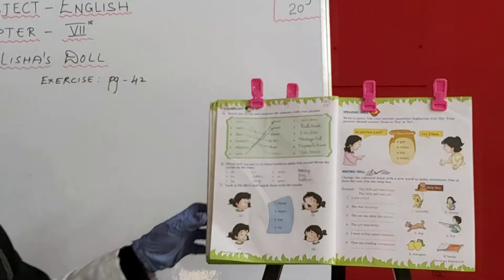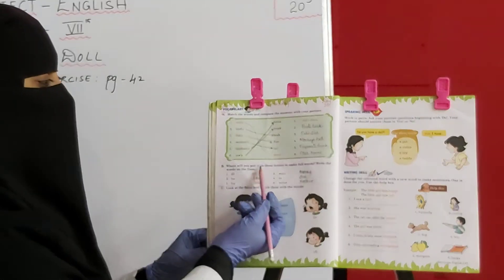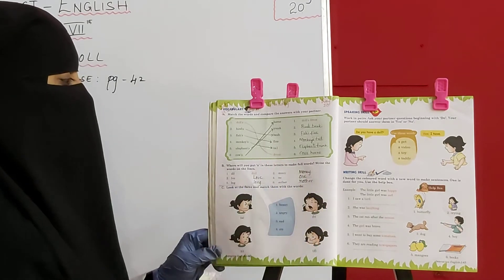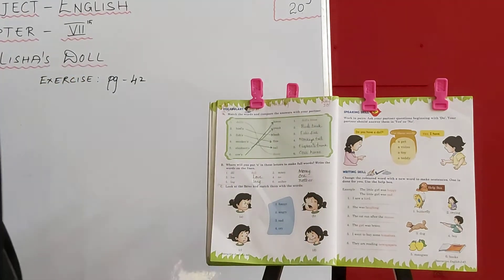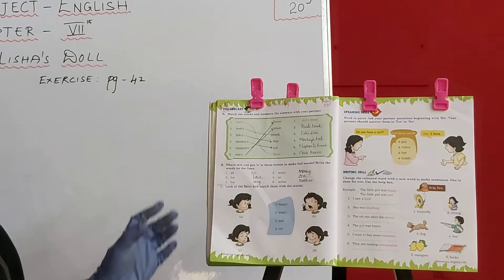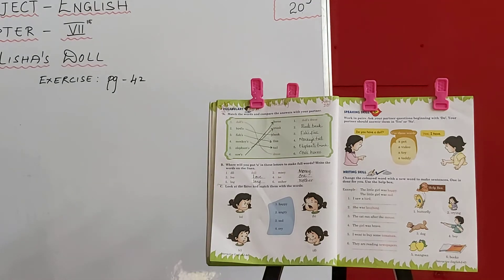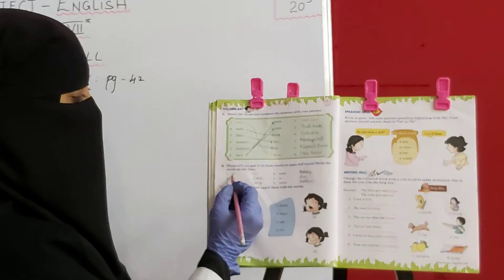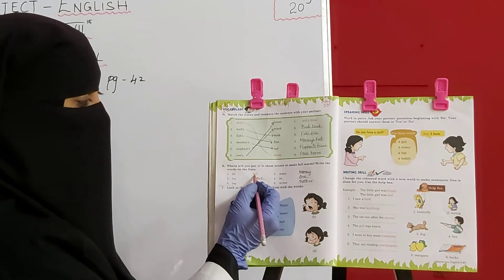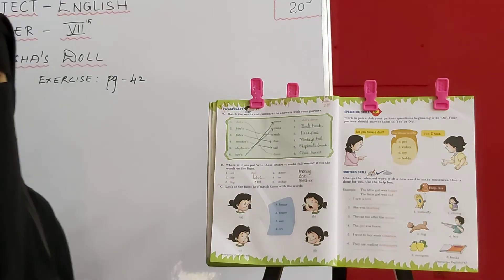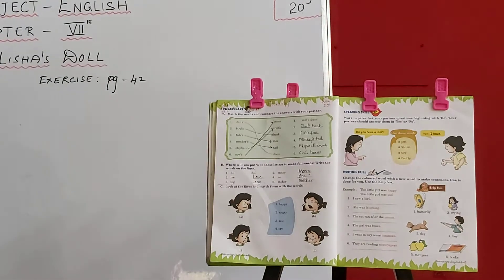Now next one: Where will you put 'o' in these letters to make full words? Abhi hamin kya karna hai? Yeh jo words diye gaye hain, yeh words mein 'o' add karna hai taake complete, meaningful word bane. Toh abhi first one kya diya gaya hai? DLL — toh humne middle mein 'o' add kiya. Isko toh yeh ban gaya: D-O-L-L — Doll.